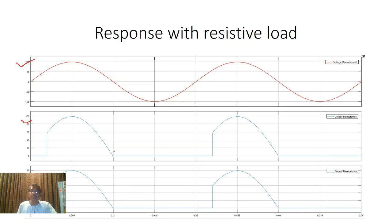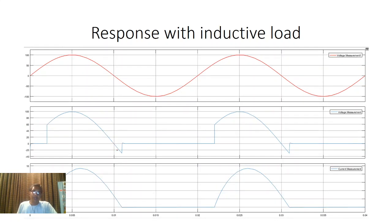Now see the response: first is for source voltage, second for load voltage, and third for load current. This is the case for a resistive load. Now if we use an inductive load — an RL load — from omega-t equal to alpha to pi, the inductor stores electromagnetic energy. When the input voltage tries to go to zero at pi, the inductor suddenly develops an opposite voltage and discharges its energy, forcing current in the same direction. So with an inductive load you get negative voltage, but the current remains in the same direction.